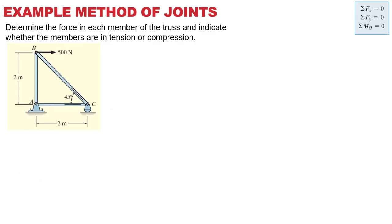This is the most simple example ever — a truss in its most simple form. Why? Because it has the minimum of three members. You cannot have a truss with only two members and have it be rigid. Three is the minimum. Step number one — what do you do? Draw a free body diagram and then solve for the external reactions.